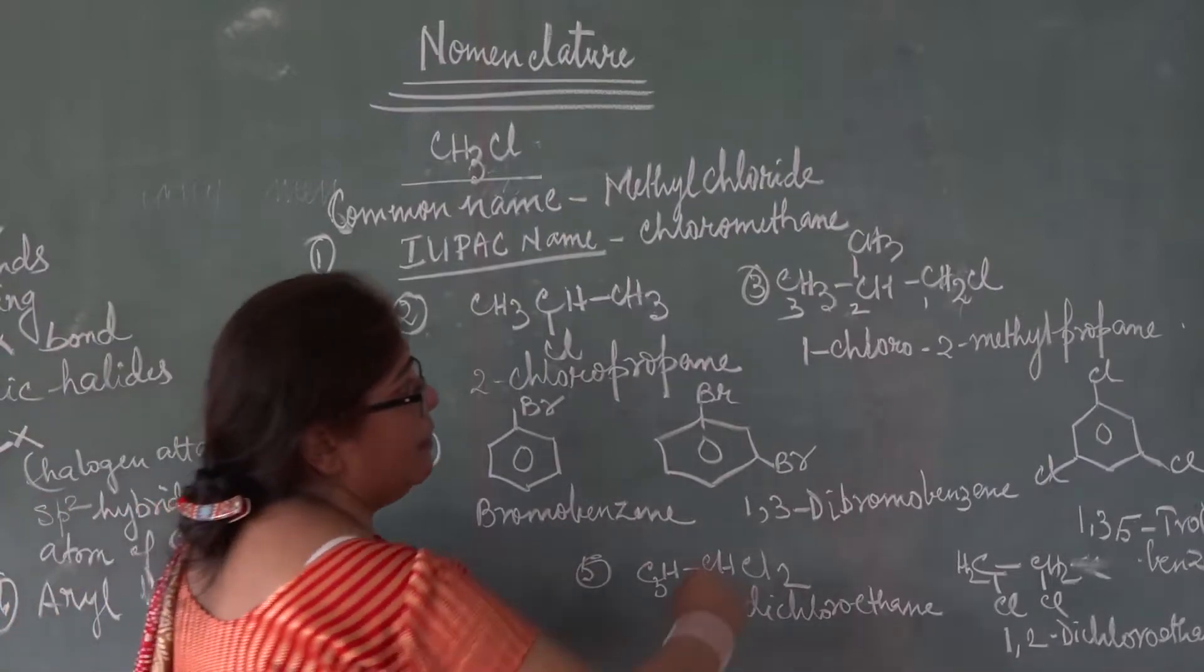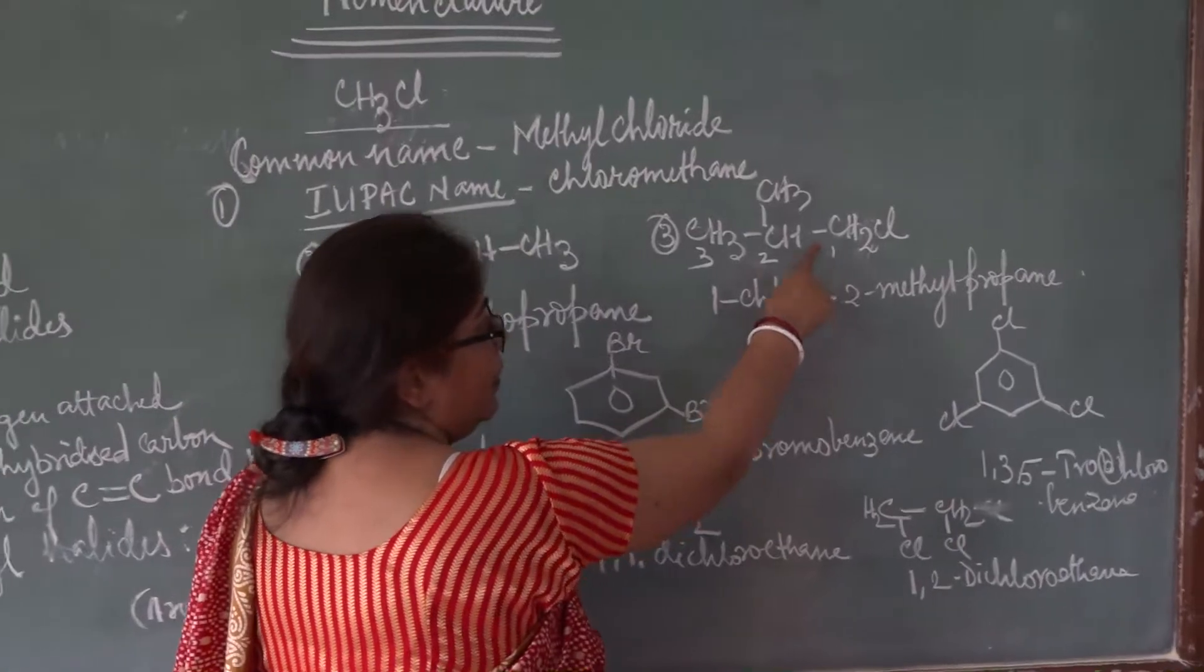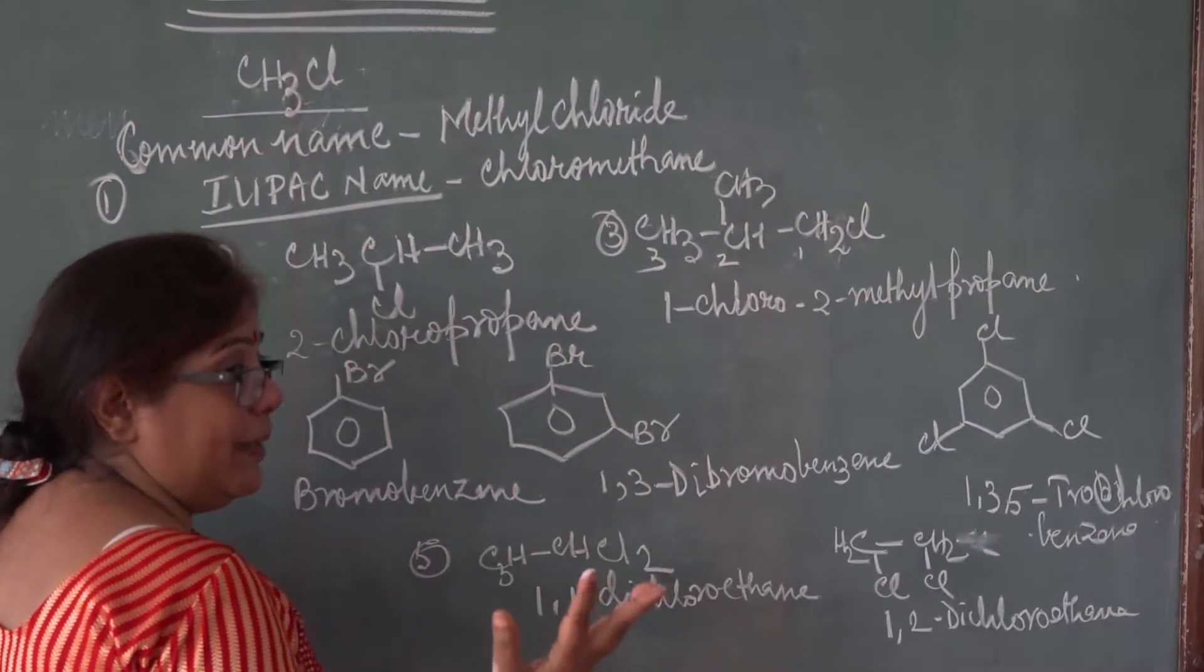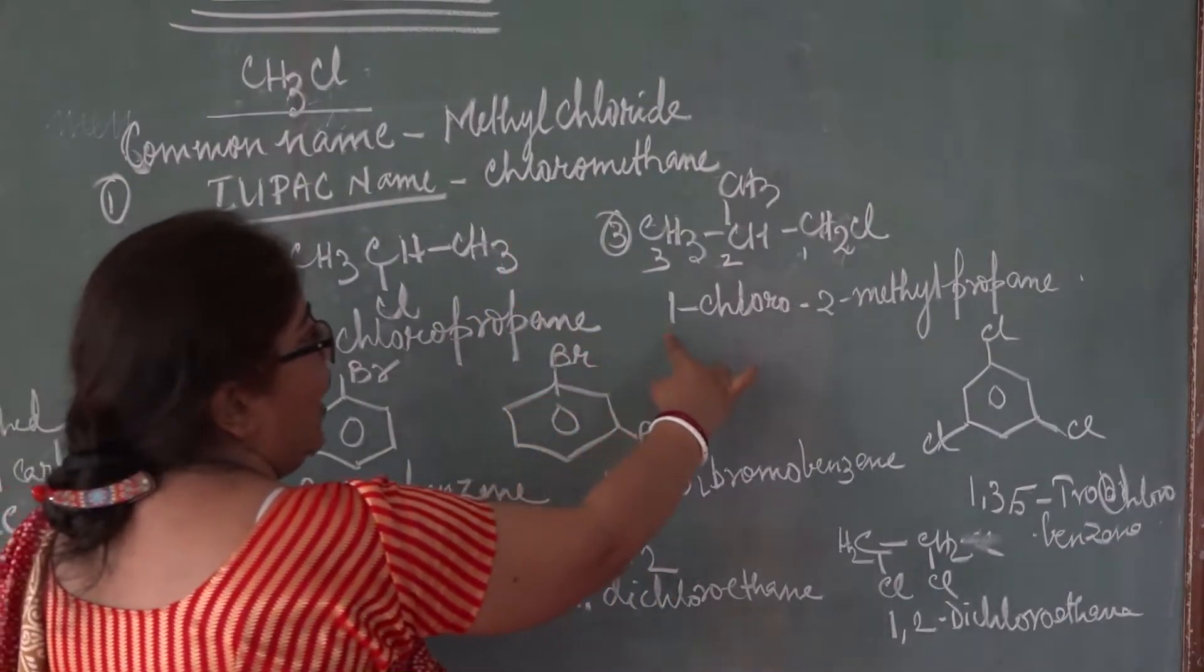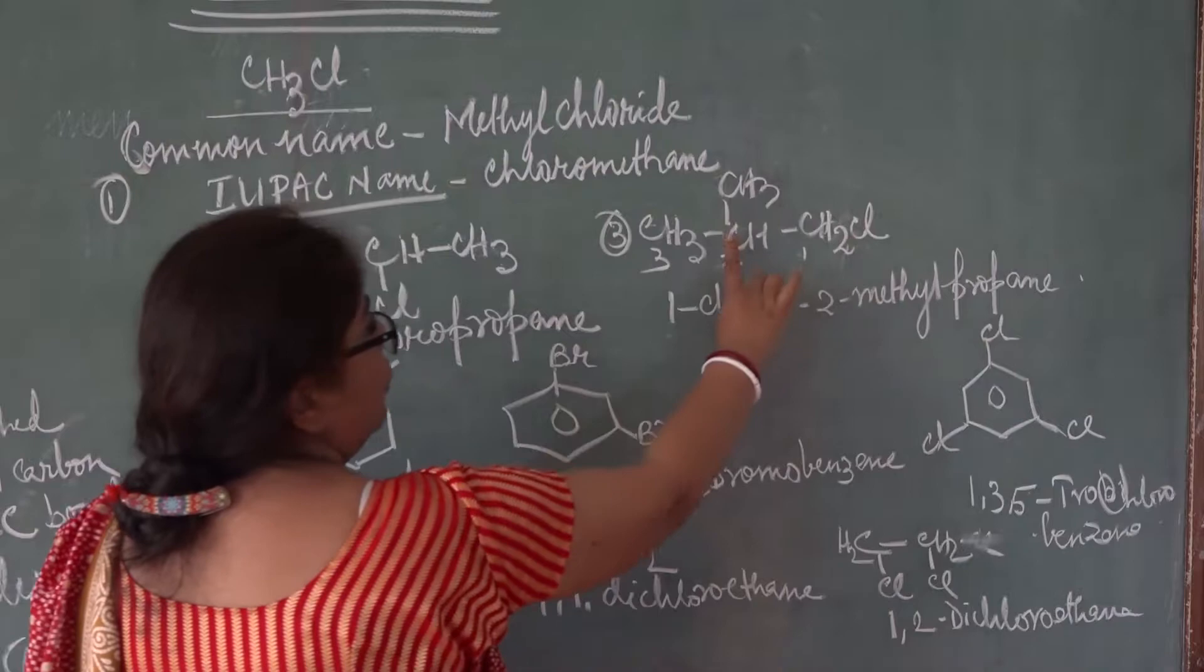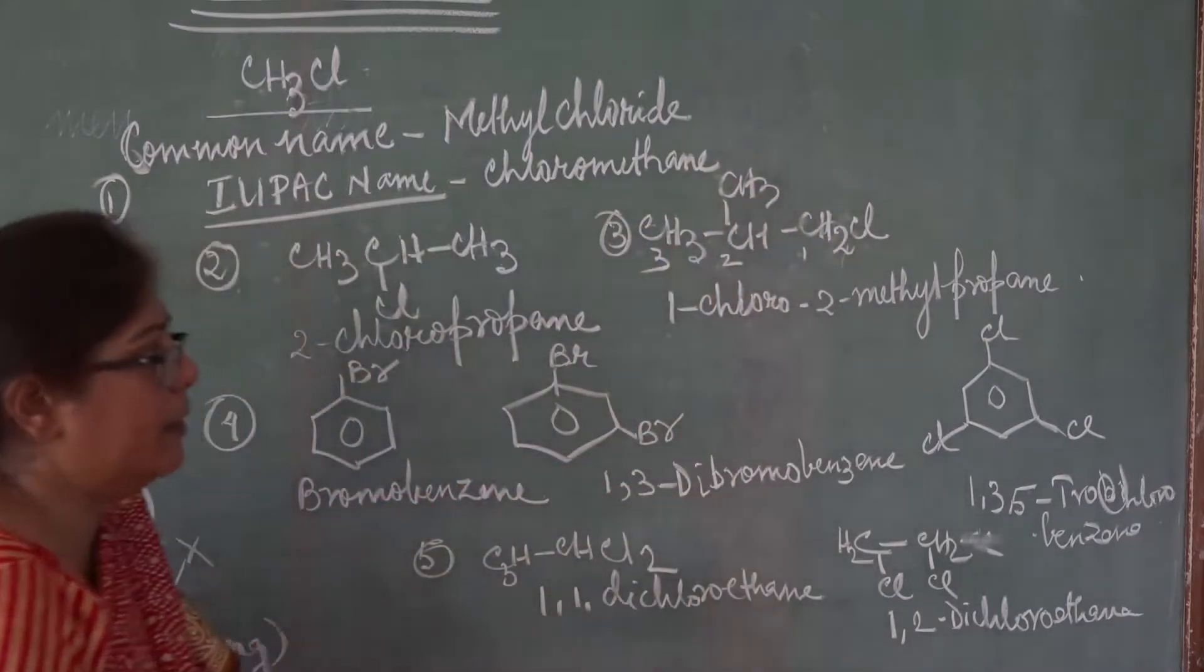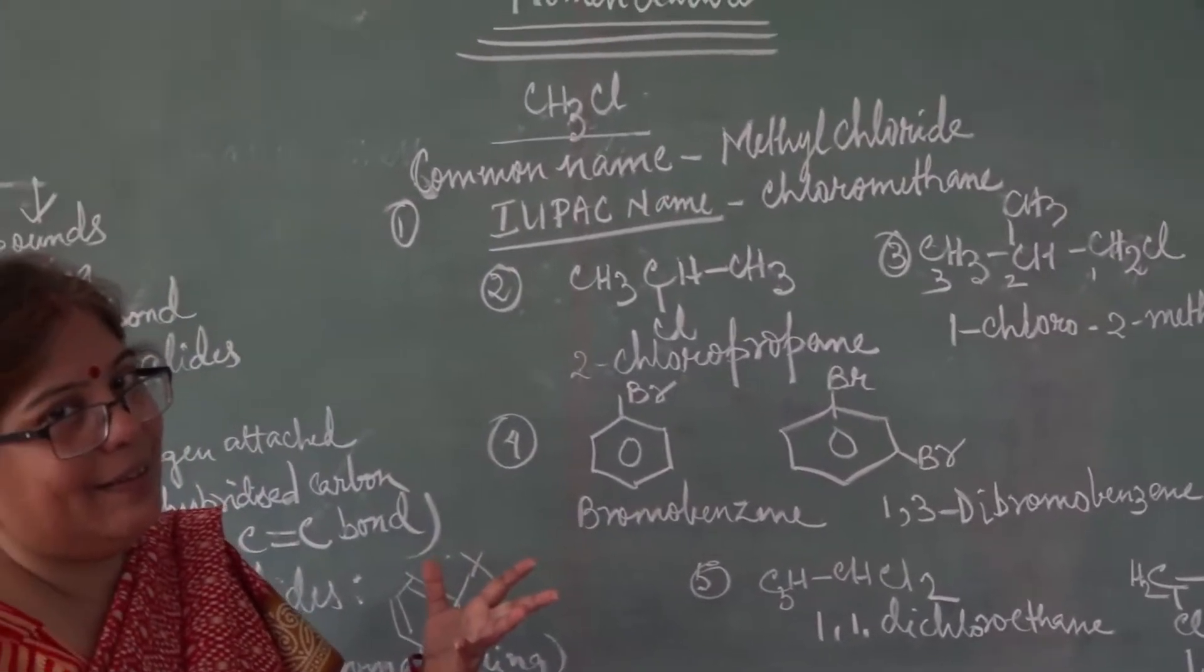You have to name it. Position of chlorine is Cl, functional group, Cl one. And in second carbon, methyl is there. Methyl group is there. CH4 is methane and CH3 is methyl. So what is the name? One, chloro, two, methyl, propane. One, chloro, two, methyl, propane. Clear?